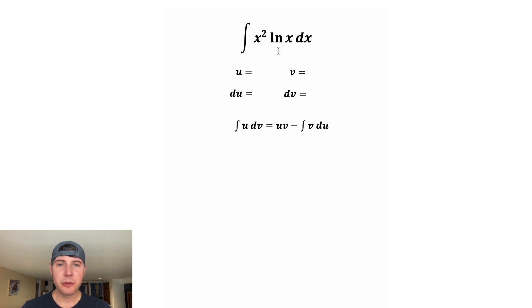For the u, we're going to do lnx, and for the dv, we're going to do x squared dx. And now we've built out our left-hand side. This integral of u dv is the integral x squared lnx dx.